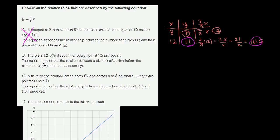Let's look at Relationship B. There's a 12.5% discount for every item at Crazy Joe's. The equation describes the relationship between a given item's price before the discount and after the discount. This equation is written as a fraction, so let's convert 12.5% into a fraction.